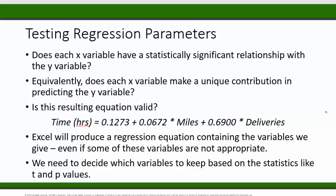If we tell the computer we want to use certain variables like miles and deliveries as the x variables, it will give you a regression containing these variables even if some of them are not really appropriate. It is up to us to decide whether to use the regression equation given to us. Fortunately, Excel will give us values like t-statistics and p-values to help us make that decision. We're going to perform hypothesis tests on each x variable to make sure they belong in the regression.